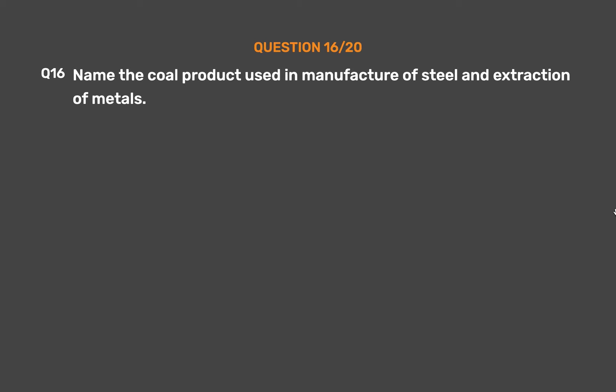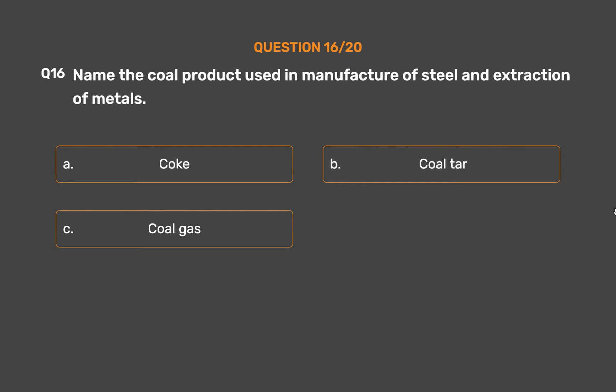Question number 16: Name the coal product used in the manufacture of steel and extraction of metals. Option A: Coke. Option B: Coal tar. Option C: Coal gas. Option D: None of these.